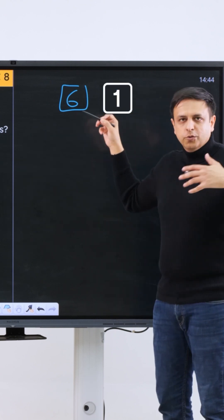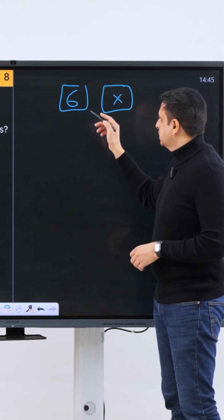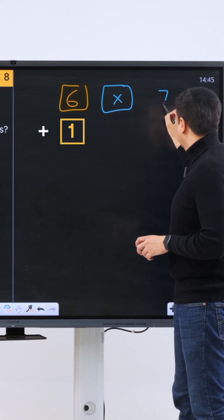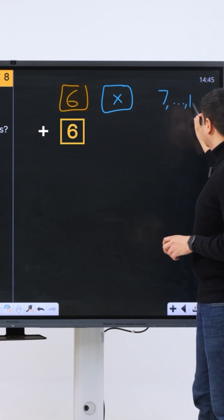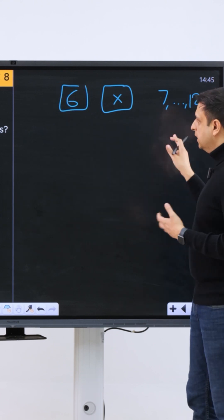This number here could be one, two, three, four, five, six. And the sum of the two numbers would go from the lowest value of six plus one, which is seven, all the way up to six plus six, which is twelve. So all the integers from seven to twelve could be possible sums in this scenario.